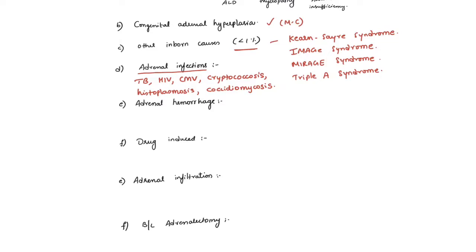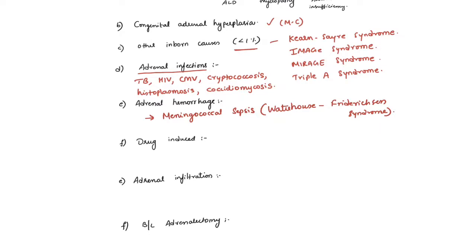Adrenal hemorrhage is also an important reason for adrenal insufficiency, since primary adrenal insufficiency is caused by destruction of the adrenal gland. It is usually seen in meningococcal septicemia — the syndrome seen in these sepsis patients is Waterhouse-Friderichsen syndrome — leading to adrenal hemorrhage with high mortality if not treated. Primary antiphospholipid syndrome patients are also at increased risk of clots in the adrenal circulation, leading to infarction and hemorrhage into the gland.